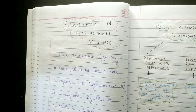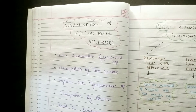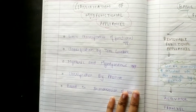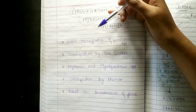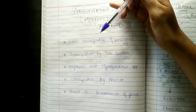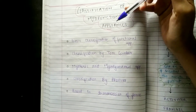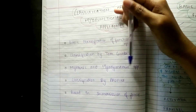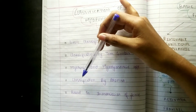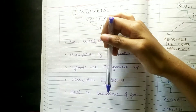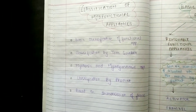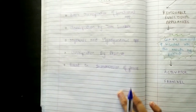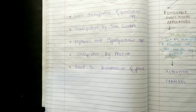Hi everyone, welcome to SAM — Study, Art, Motivation and Education. In this video I am going to tell you about the classification of myofunctional appliances. This classification is divided in five ways: the basic classification of functional appliances, the classification given by Tom Graeber, myotonic and myodynamic appliances classification, classification by Profit, and based on transmission of force.